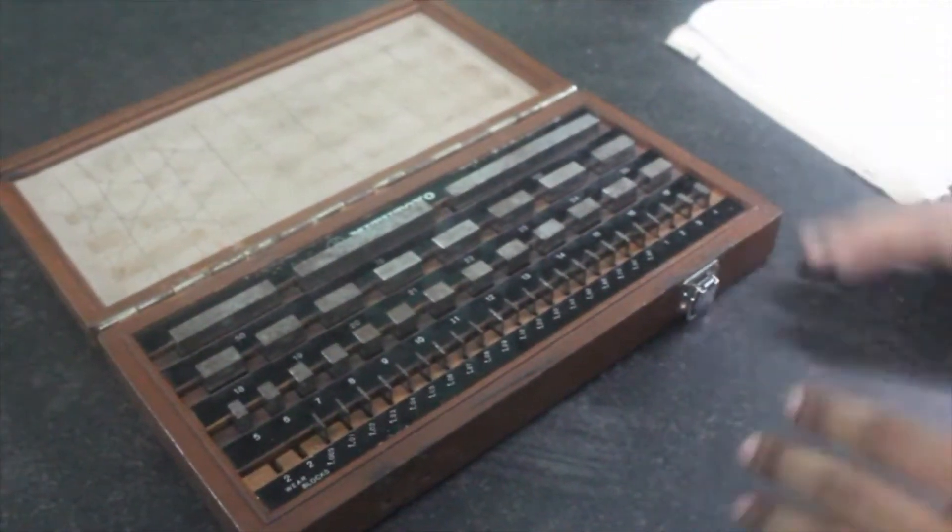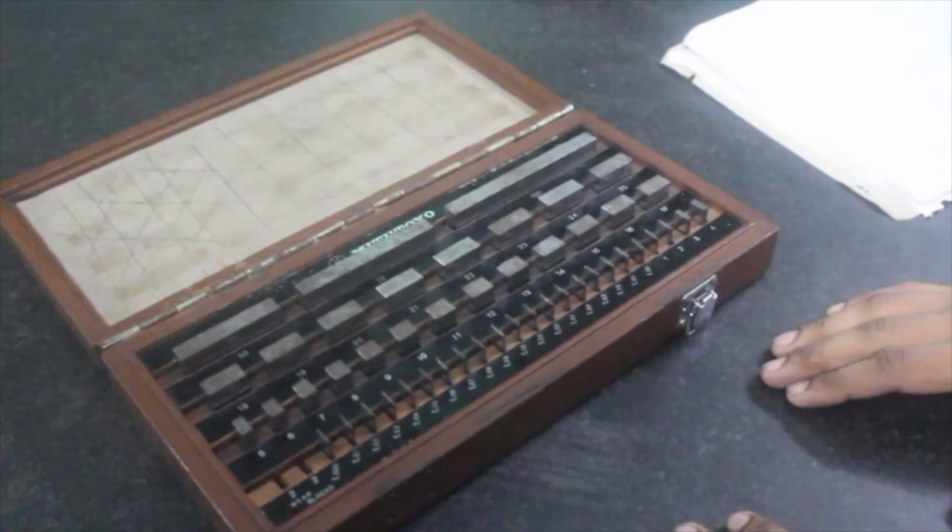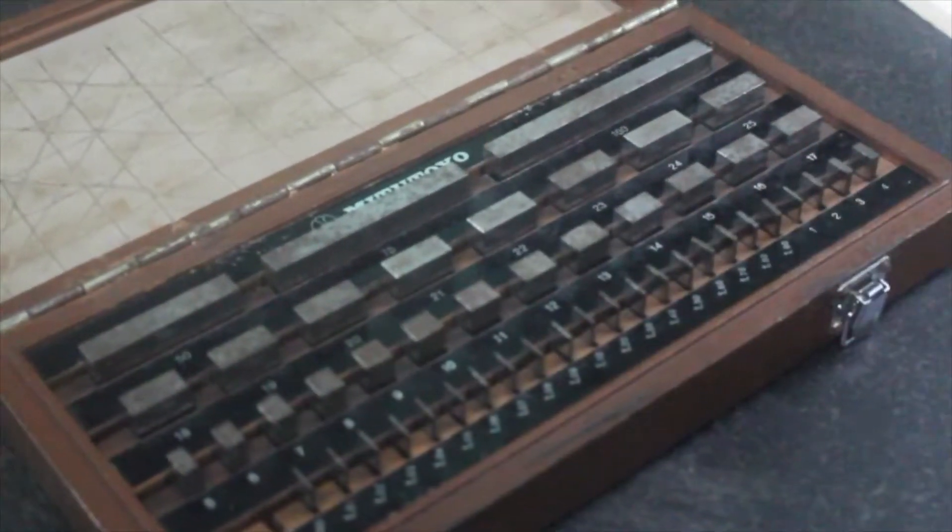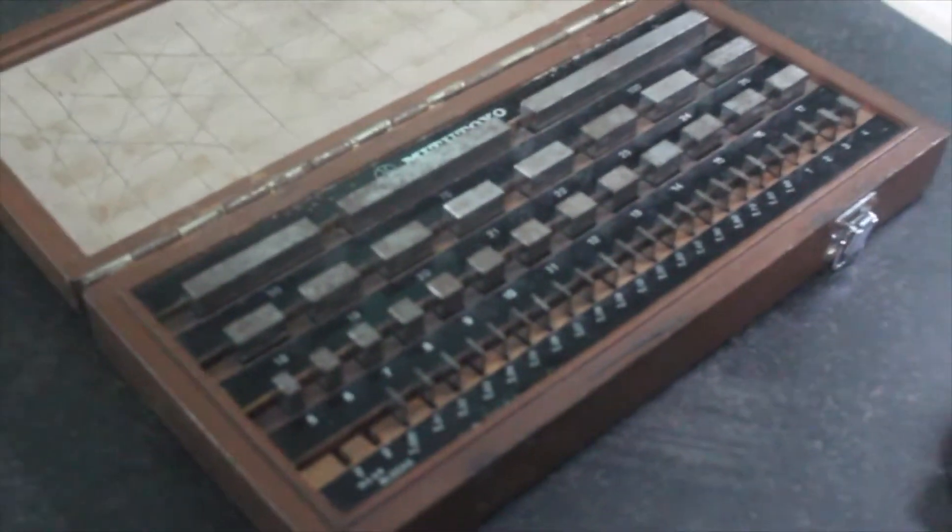Suppose we want to measure some distance, 15 mm. Here blocks of 10 and 5 are available. So now we are going to look at how we do wringing.